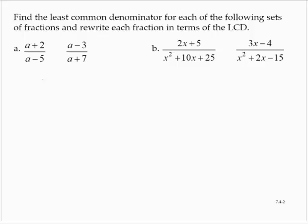Find the LCD for each of the following sets of fractions and rewrite each fraction in terms of the LCD. We're given the fractions (a + 2) over (a - 5) and (a - 3) over (a + 7).